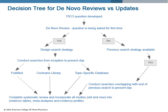If, however, the question is not being asked for the first time and a previous search strategy is available, new searches should be conducted with the publication date limits overlapping with the end of the previous search date to present day. If a previous search strategy is not available, then you should follow the process for conducting a de novo review and design your own search strategy.